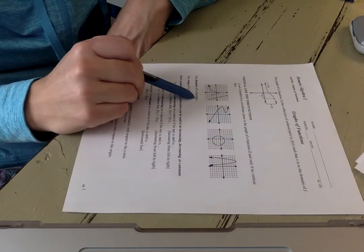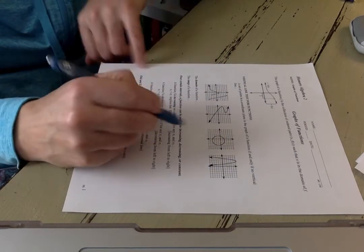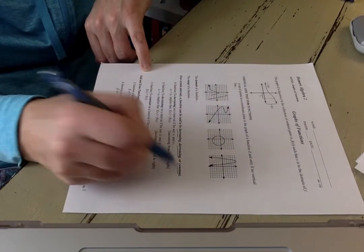We know that the domain of a function is all your x values, the range is all your y values. And then it gets into functions increasing, decreasing, or constant.